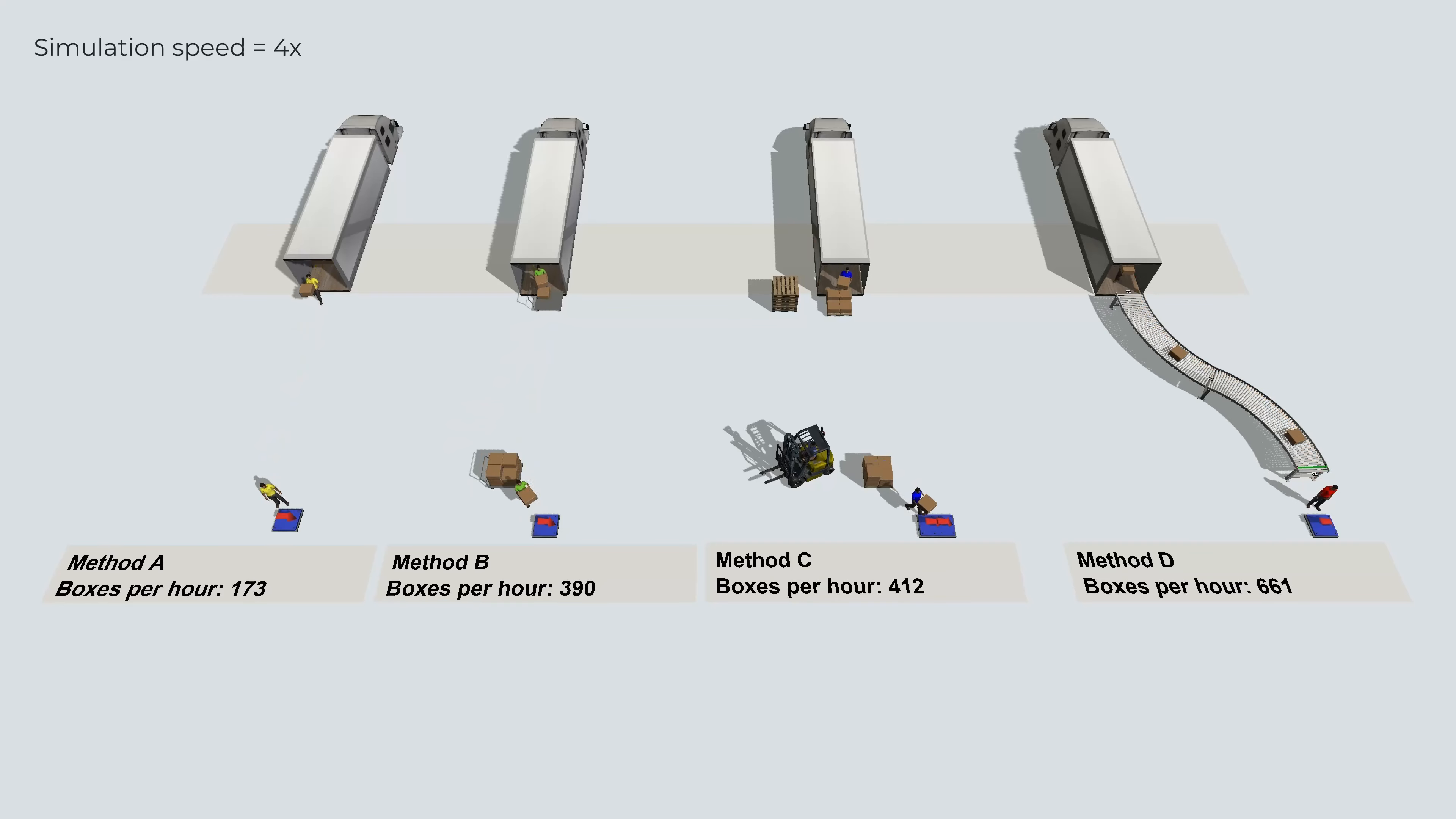Without a surprise, method A is the least productive and by far. It only processes around 170 boxes per hour, while methods B and C process more than double that. And method D processes as much as three times more boxes per hour than method A.